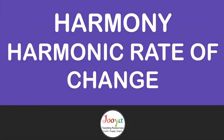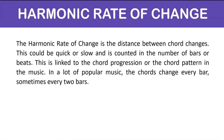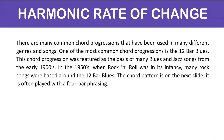The harmonic rate of change is the distance between chord changes. This could be quick or slow, and is counted in the number of bars or beats. This is linked to the chord progression or chord pattern in the music. In a lot of popular music, the chords change every bar, sometimes every two bars. There are many common chord progressions that have been used in many different genres and songs. One of the most common is the 12-bar blues, which was featured as the basis of many blues and jazz songs from the early 1900s. In the 1950s, when rock and roll was in its infancy, many rock songs were based around the 12-bar blues.